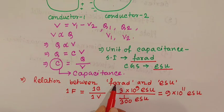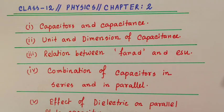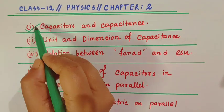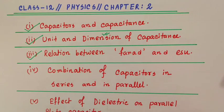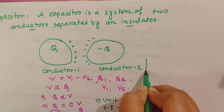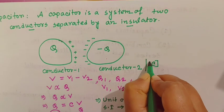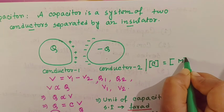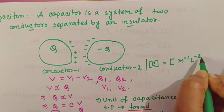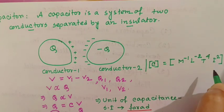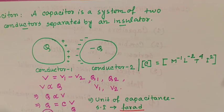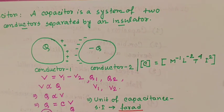So we completed those three topics. Now let's see the dimension of capacitance. Just remember, the dimension of capacitance equals M⁻¹ L⁻² T⁴ I².